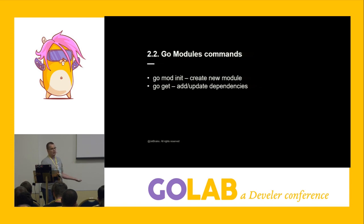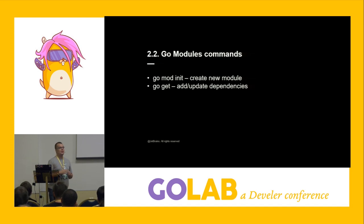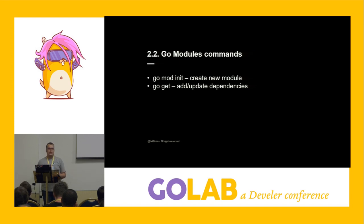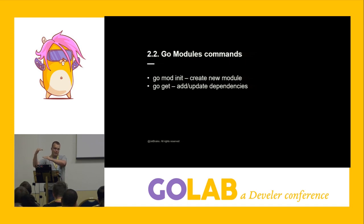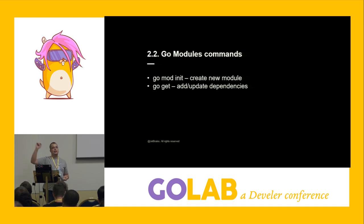GoGet has been updated as well — you can still use GoGet to fetch dependencies, but now GoGet allows you to specify a version. Before Go modules, GoGet was not aware of any versioning; it fetched whatever was at head. Now you can say GoGet at this specific version or that specific commit, which is pretty cool.